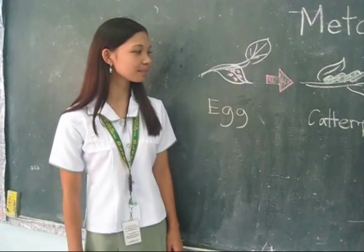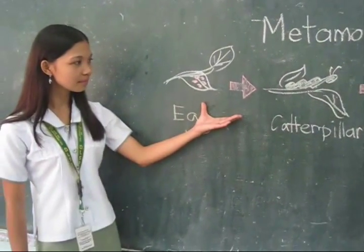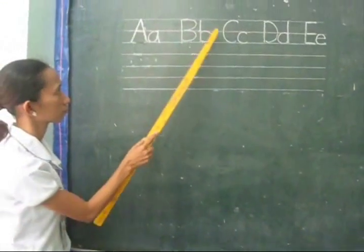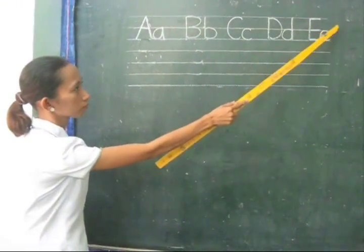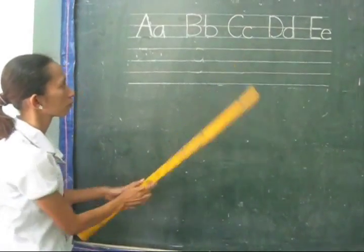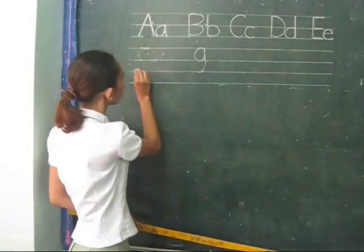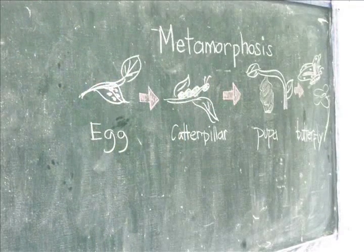Number six: For the sake of order and clarity, start to write from the left side of the board going to the right. Number seven: If you teach the grades and you think the lines on the chalkboard are needed for writing exercises, then provide the lines for your chalkboard.